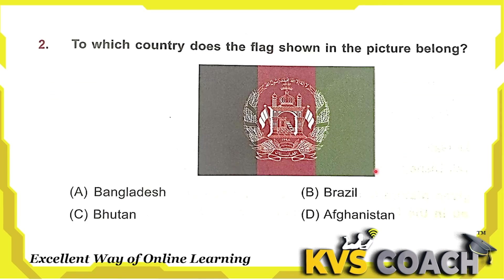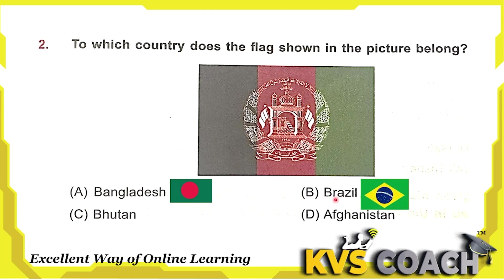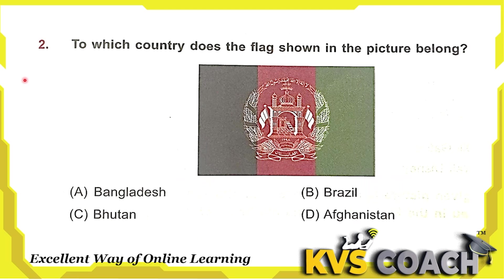Next question: to which country does the flag shown in the picture belong? Option A is Bangladesh — the flag of Bangladesh is like this. Option B is Brazil — the flag of Brazil is like this. Option C is Bhutan — the flag of Bhutan is like this. Option D is Afghanistan — the flag of Afghanistan is this. So the right option is option D.